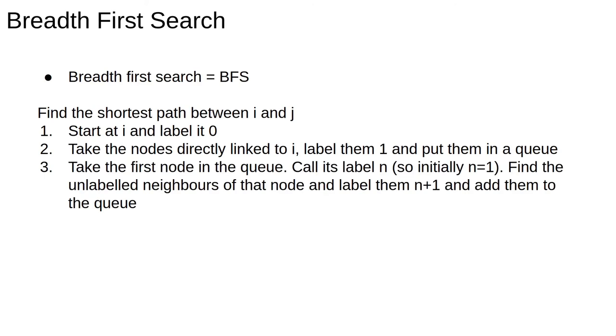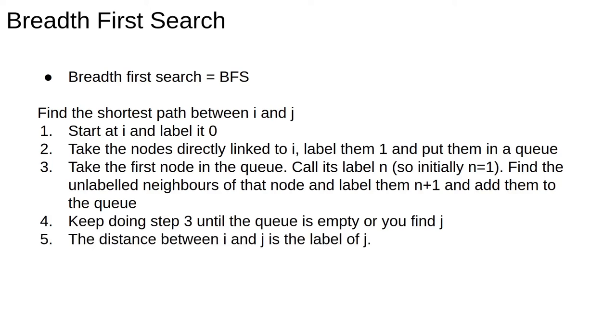We then take nodes out of the queue and check their neighbors, giving unlabeled neighbors label 1 plus the label of the node we chose from the queue. We keep removing and adding from the queue until we run out of nodes or we reach the target j. The label of the node j is the distance between the starting node i and the node j.